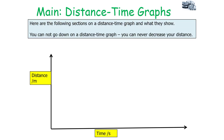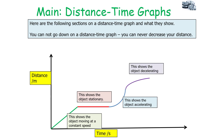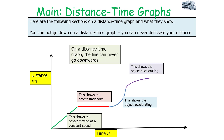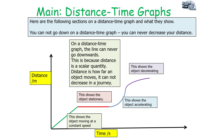Here are the sections on a distance-time graph and what they show. It's important to note you cannot go down on a distance-time graph, because you can never decrease your distance travelled — it's a scalar. A straight upward slope shows constant speed; a flat horizontal line shows a stationary object; a curve upward shows acceleration; and a curve that flattens shows deceleration. The line can never go downwards because distance travelled is a scalar quantity.